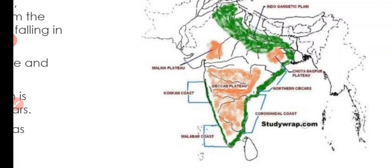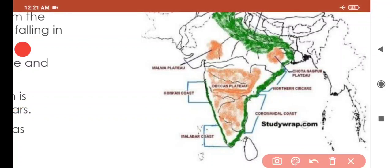Coastal plains are fertile and densely populated. These coastal plains are fertile kyunki yahan rivers delta form karti hain — rivers sediment and silt deposit kar rahi hain in areas mein, toh yeh areas fertile bhi hain, aur fertile area mein population bhi zyada hoti hai. The northern part of the eastern coastal plain is known as Northern Circars, while the southern part is called the Coromandel Coast.